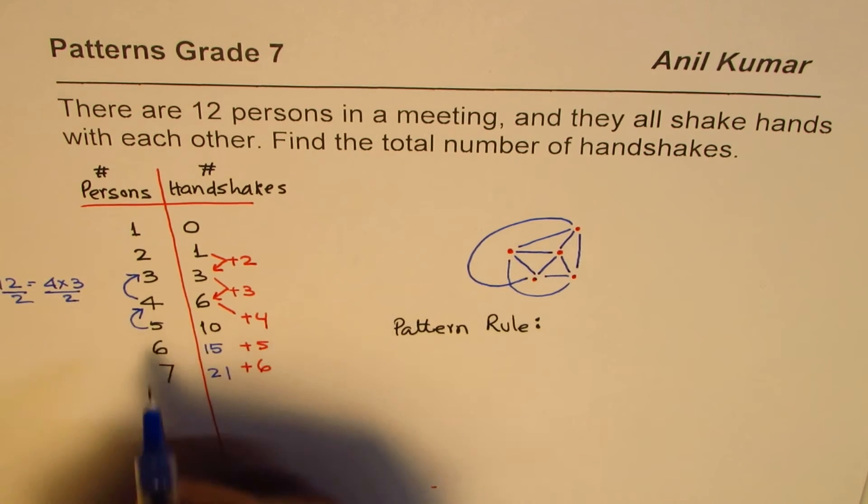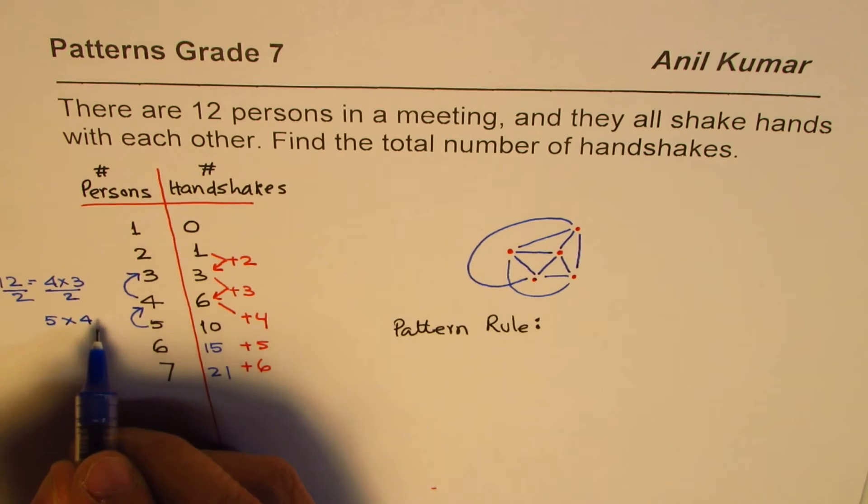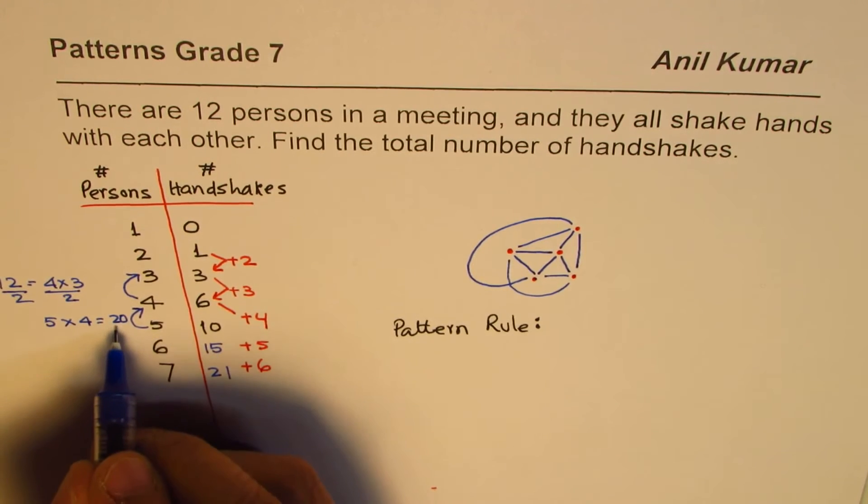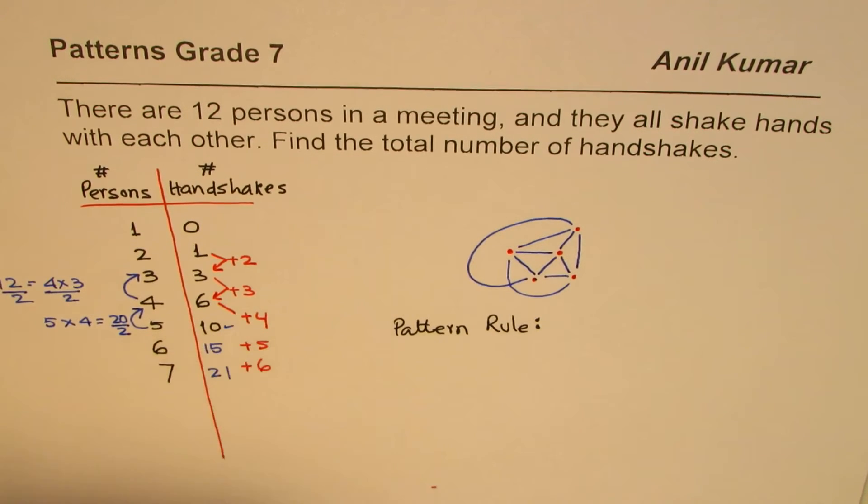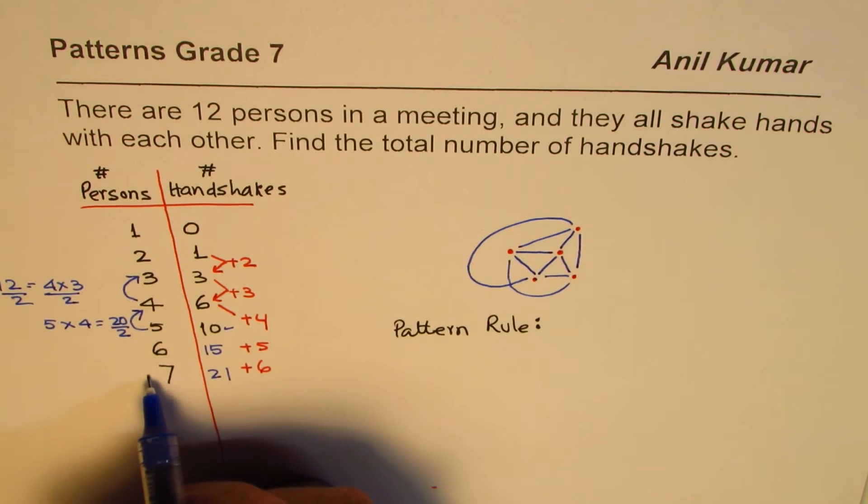Let me try this time with 5 and 4. So let us see what we get. 5 times 4 is 20, and half of 20 is 10. It works.